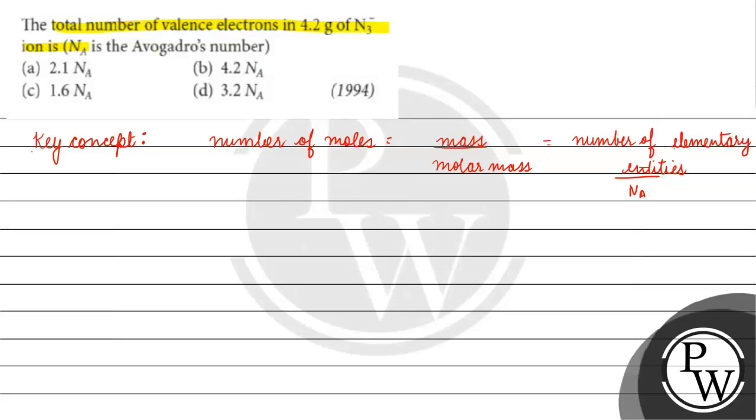We will see how many valence electrons one molecule of N₃⁻ has. After that, we multiply by the number of molecules to get the total valence electrons.